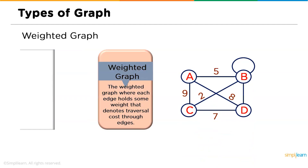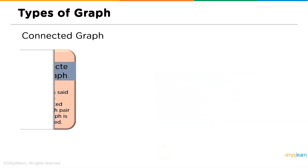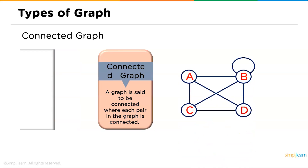Now we have the weighted graph: a weighted graph is one where each edge holds some weight that denotes the traversal cost through that edge. For example, the edge from A to B has weight 5, A to C has weight 9, C to B has weight 2, A to D has weight 8, and C to D has weight 7. Followed by weighted graph we have the connected graph: a graph is said to be connected where each pair of vertices in the graph is connected.